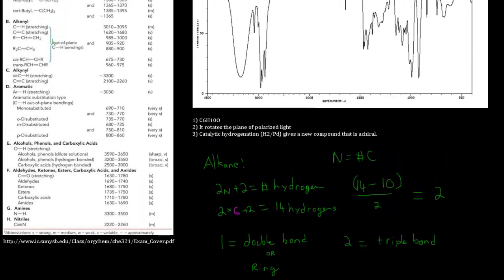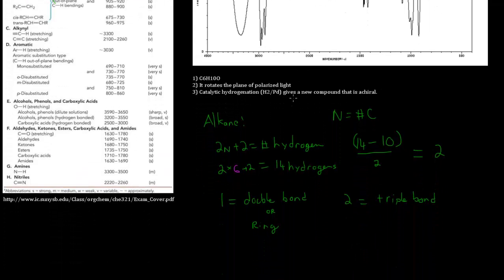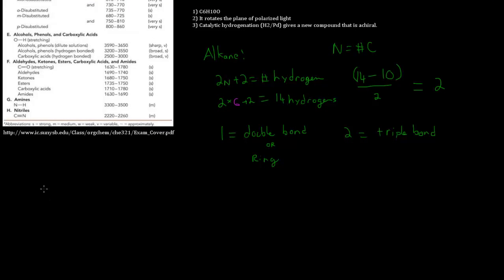Since catalytic hydrogenation gives an achiral compound, the most straightforward explanation is that the compound is some sort of ring structure — rings commonly become achiral upon hydrogenation. So I assume the compound is a ring with an alcohol group attached.